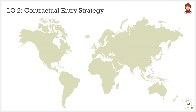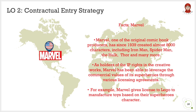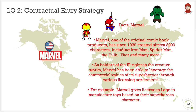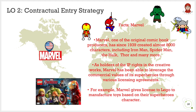Here is a simple example of licensing — Marvel. Marvel is based in the US and is one of the original comic book producers, having created almost 8,000 characters since 1939, including Iron Man, Spider-Man, The Hulk, and Thor. As holders of intellectual property rights in these creative works, Marvel has been able to leverage the commercial value of its superheroes through various licensing agreements. For example, Marvel gives a license to Lego to manufacture toys based on their superhero characters.